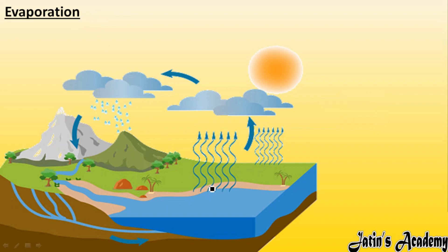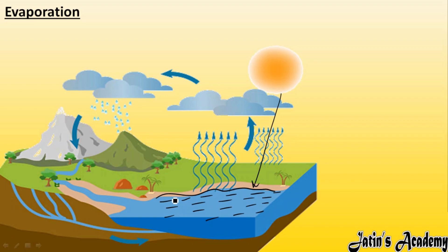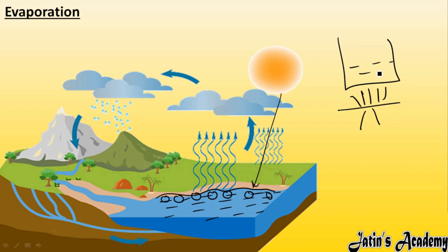Evaporation only takes place at the surface of liquid. For example, in a container of liquid particles, when the liquid takes heat from the sun, only the upper part of the water molecules will take the heat and evaporate, converting into gaseous form. In boiling, the particles near the heat source take the heat and move upward to convert into gaseous form. So boiling is a bulk phenomenon — each and every particle boils — but evaporation takes place only at the surface.